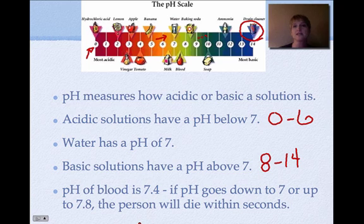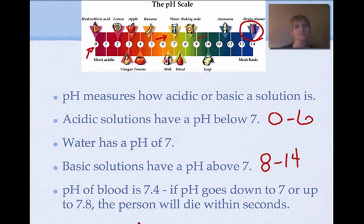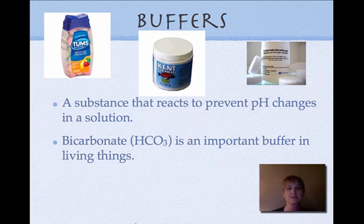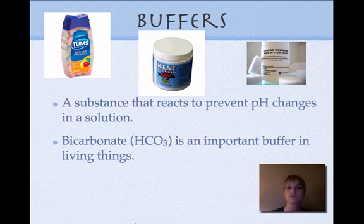Blood has a pH of 7.4, which is critically important to the body. If pH drops to seven or rises to 7.8, a person could die within seconds because the body's pH must be maintained at a normal level. Buffers are substances added to a solution to help prevent pH changes. Bicarbonate (HCO₃⁻) is an important buffer in living things — when you take Tums for an upset stomach, you're adding bicarbonate to bring your stomach back to a normal pH level.